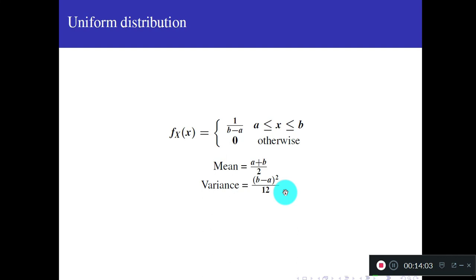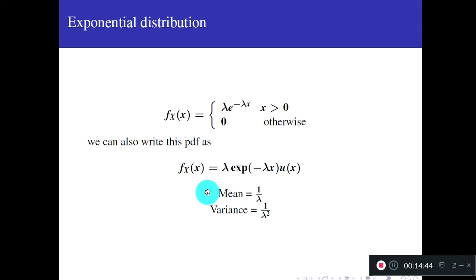For the uniform distribution, mean = (a + b)/2 and variance = (b − a)²/12. The variance formula uses E(X²) − [E(X)]², or equivalently E[(X − μ_X)²], where μ_X is the mean.